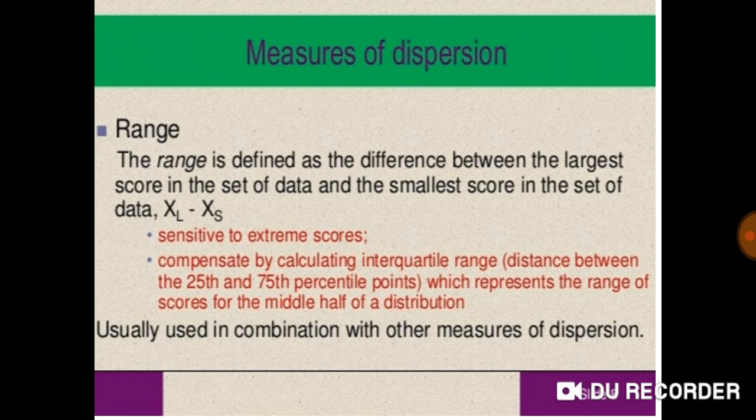Measures of dispersion: range. The range is defined as the difference between the largest score in the set of data and the smallest scores in the set of data. XL minus XS. Sensitive to extreme scores.